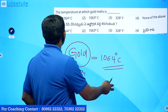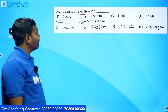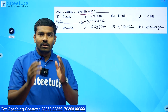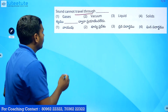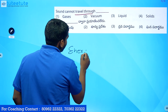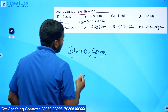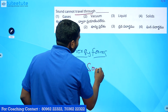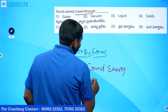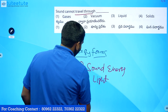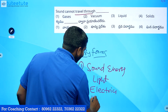The melting point of gold is 1064. Next question: sound cannot travel through — ? The energy forms are: sound energy, light energy, electrical energy, magnetism, and heat energy.